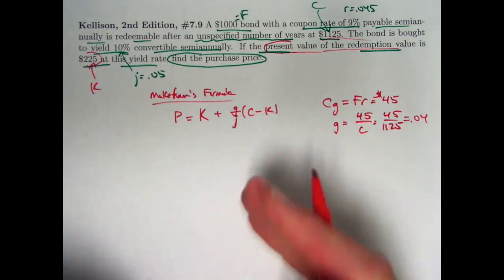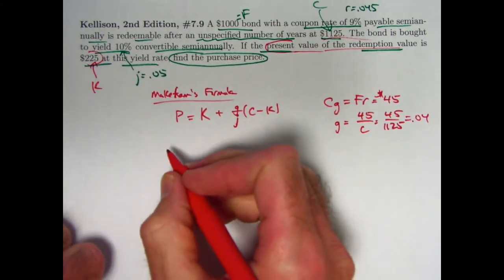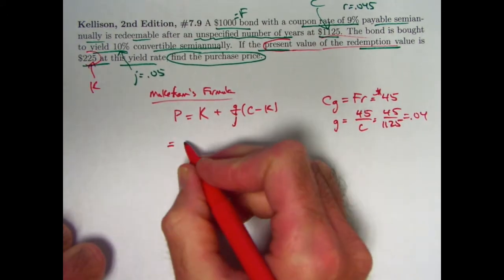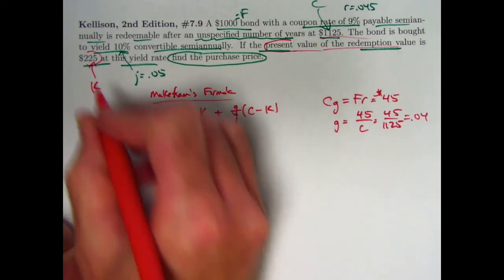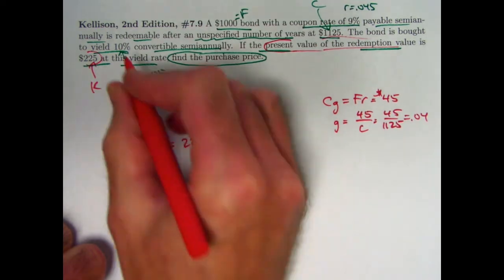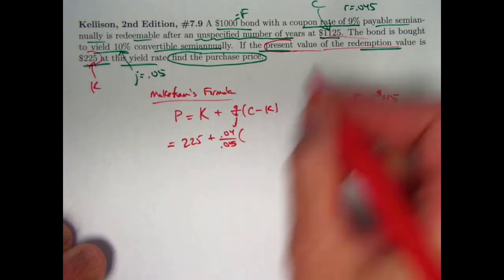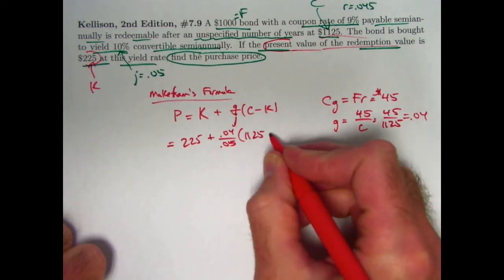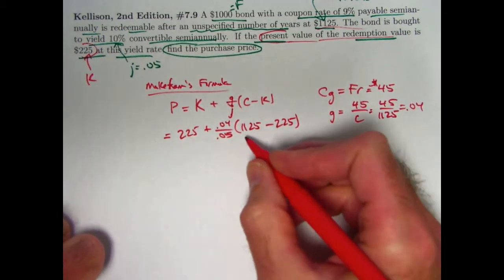So we know everything we need to know to use this formula pretty quickly once we've figured out little g. So it's a pretty efficient use, a pretty efficient approach, I think. So K here again is 225. That's right there. Little g we've just found is 0.04. Little j was half of 10%, 5% or 0.05. C was 1125. K again is 225.